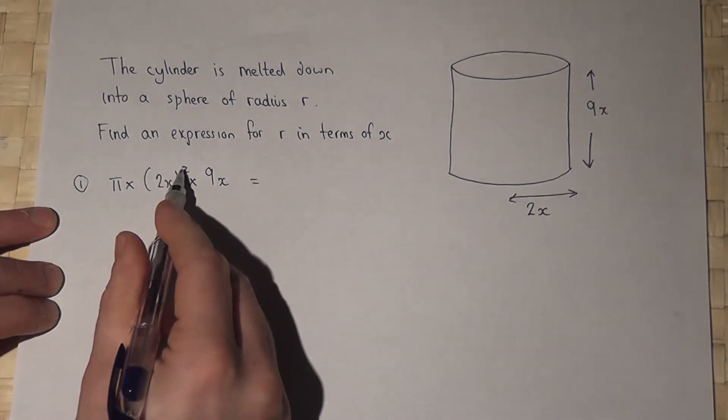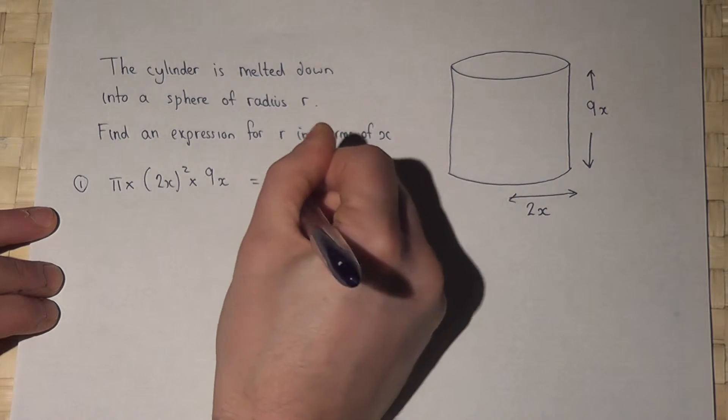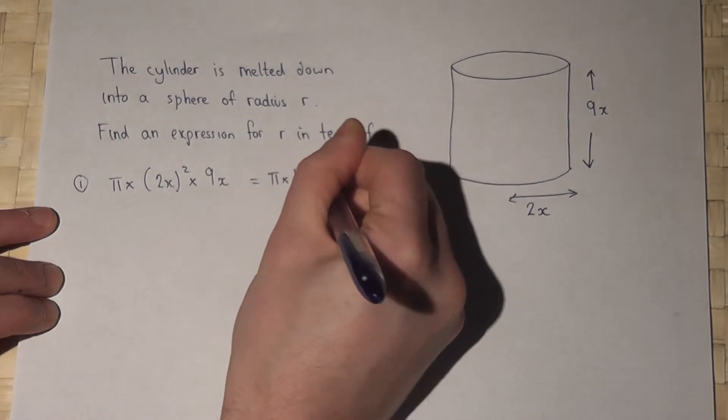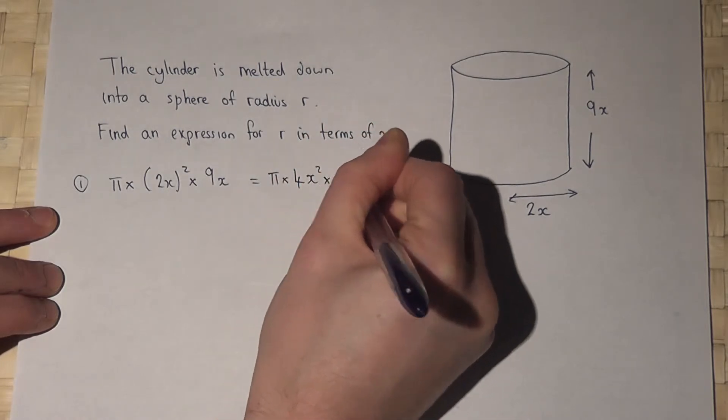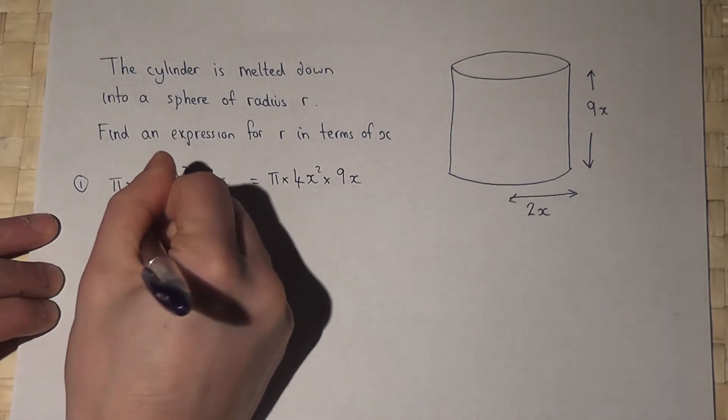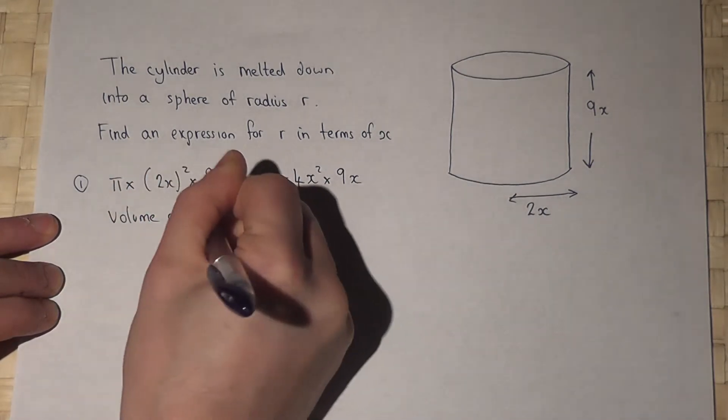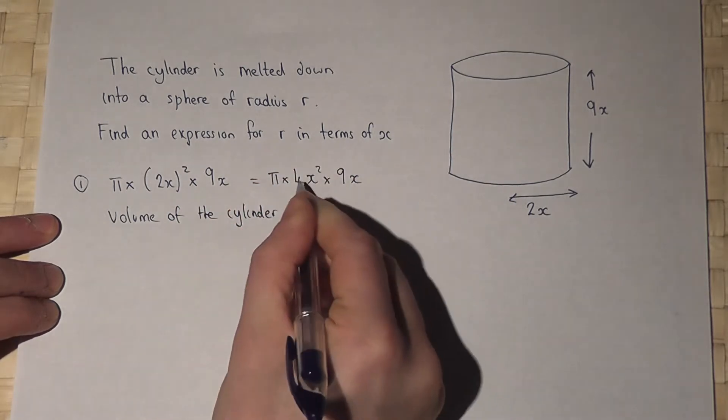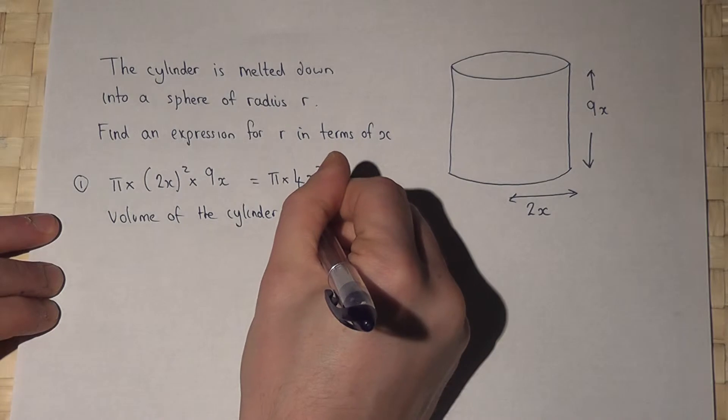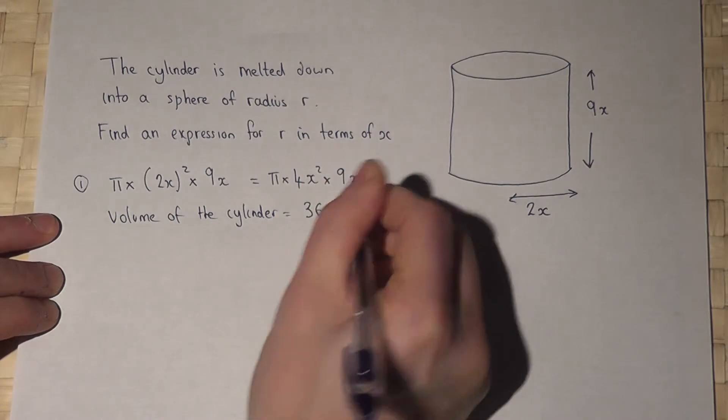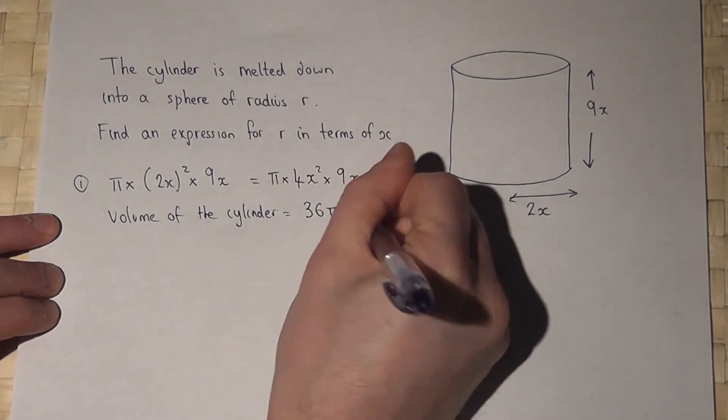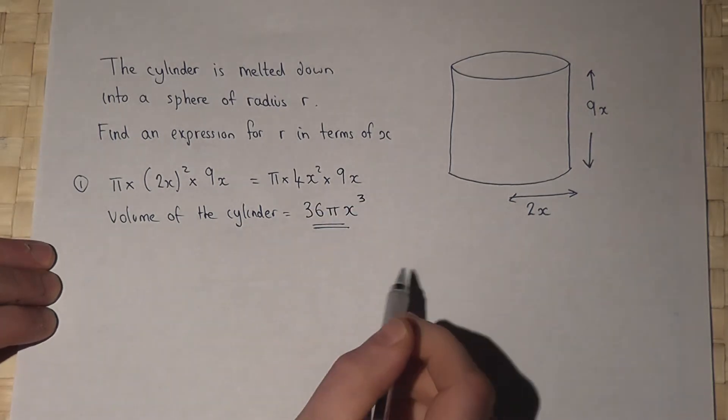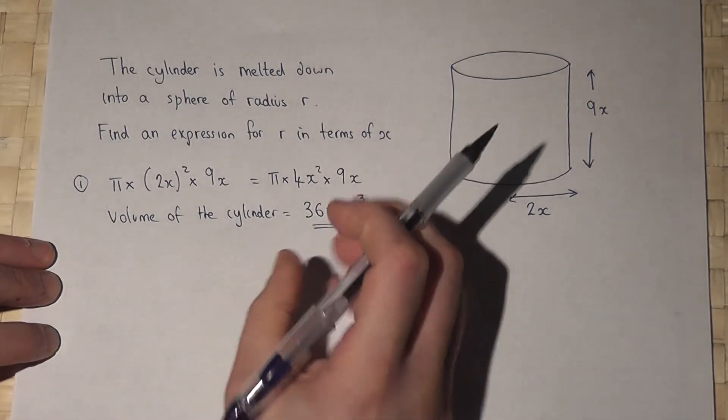2 squared is 4, so it's π times 4x² times by 9x. So the volume of the cylinder equals 4 times 9 is 36, 36πx³. Now this entire volume is then turned into a sphere.